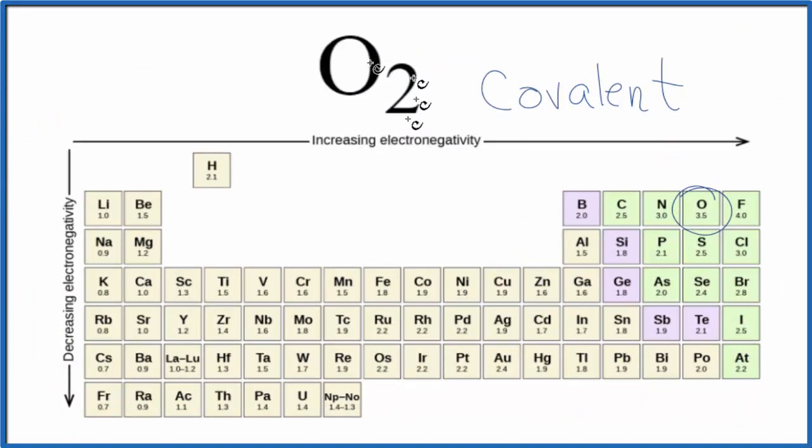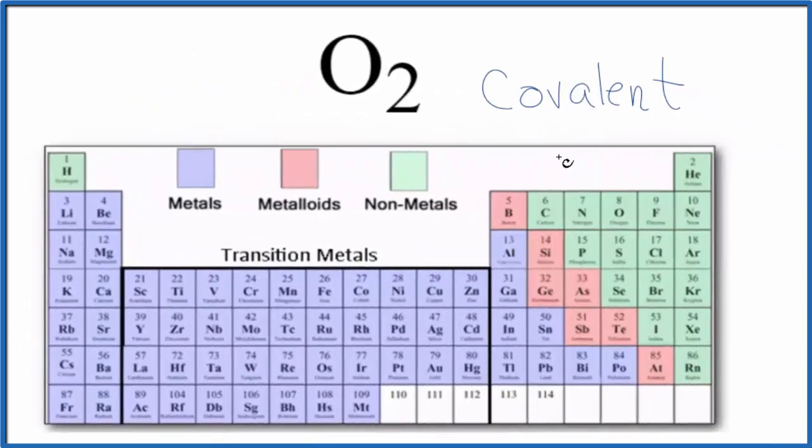so there really is no difference in electronegativity for this molecular oxygen. We could say the difference is 0. 3.5 minus 3.5 gives us a difference of 0. And that would mean this is non-polar covalent, to be specific.